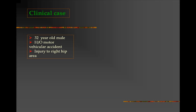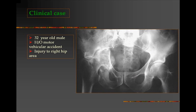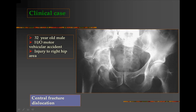Our next clinical case is of a 32-year-old male who had a history of motor vehicle accident with injury to the right hip area. The x-ray shows an injury on the right side called a central fracture dislocation, where the head of the femur has pushed through the floor of the acetabulum and is lying within the pelvic cavity.